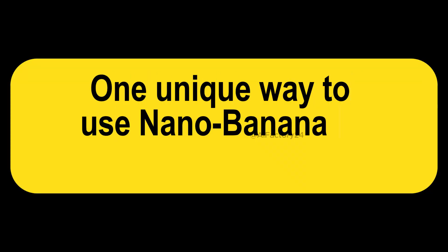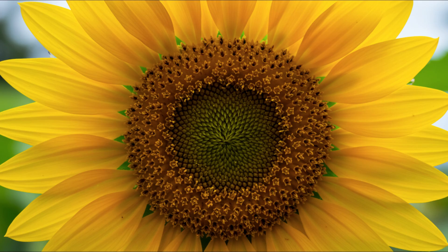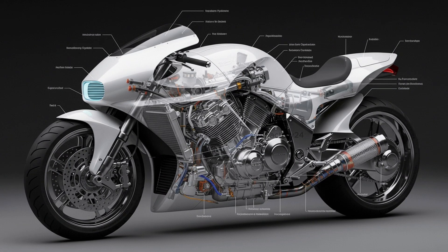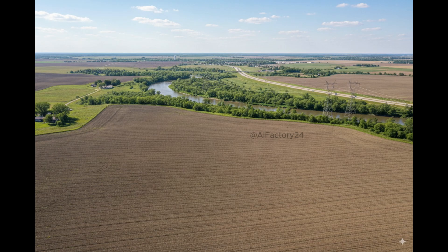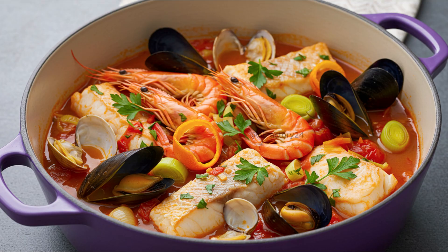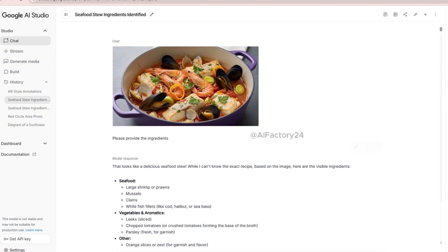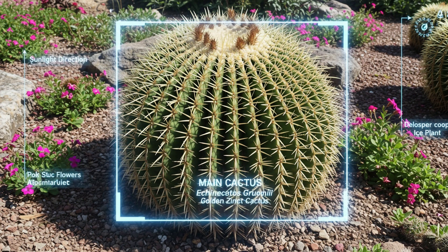One unique way to use Nanobanana is for illustration and analysis. By uploading a photo of a plant, you can ask it to generate detailed visual breakdowns and educational-style diagrams — for example, analyzing a sunflower produces a result that looks like a biology textbook page with clear parts and accurate labeling. Or provide a diagram showing the internal structure of a motorcycle. Take a screenshot from Google Maps and ask for a photo of the circled area, and you'll instantly get a clear picture of that location. Upload a food image and prompt it to provide the ingredients, or ask for AR-style annotations to get smart labels overlaid right on top of the picture.